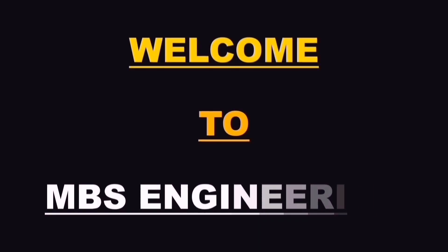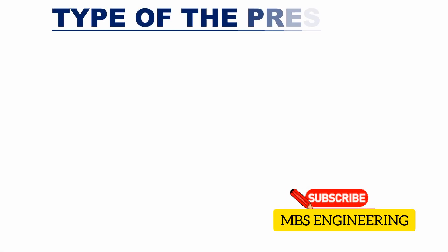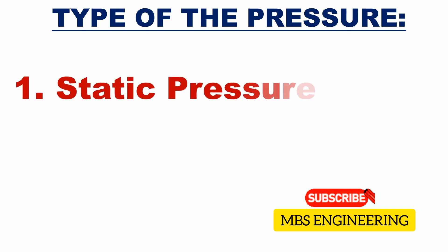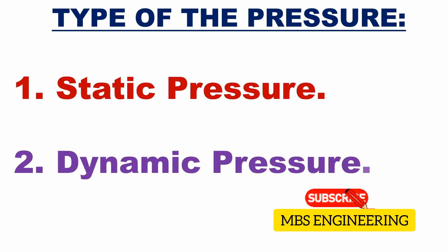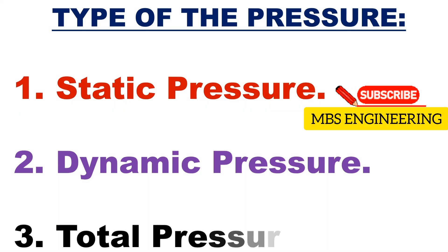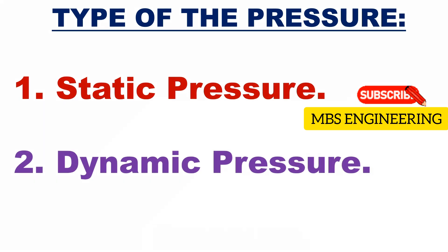Welcome to the MBS Engineering Channel. Today we will understand the following topics. The types of pressure: static pressure — a stationary fluid has static pressure; dynamic pressure — any fluid with velocity or flowing fluid has dynamic pressure; and total pressure, which is the sum of the static pressure and dynamic pressure of the fluid flow.